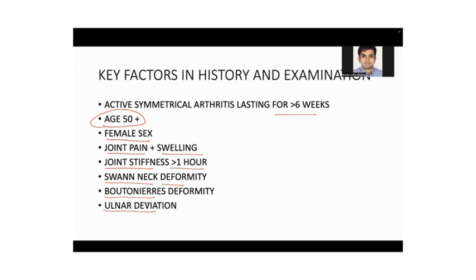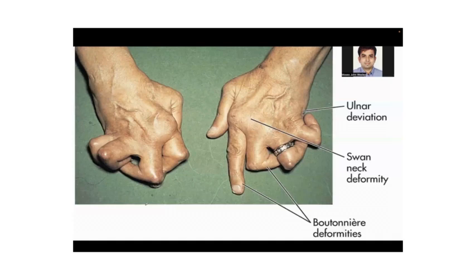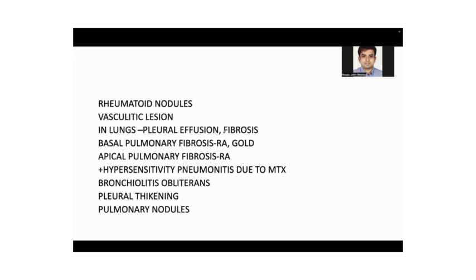Here is a hand of a patient with rheumatoid arthritis — this is ulnar deviation, can you see? And this is boutonniere deformity here. I'll show you a much better picture as well.